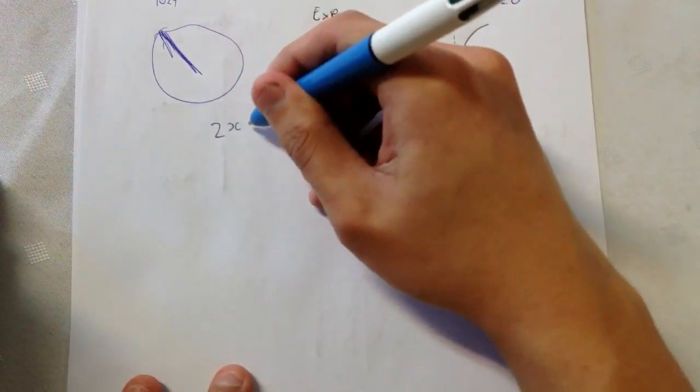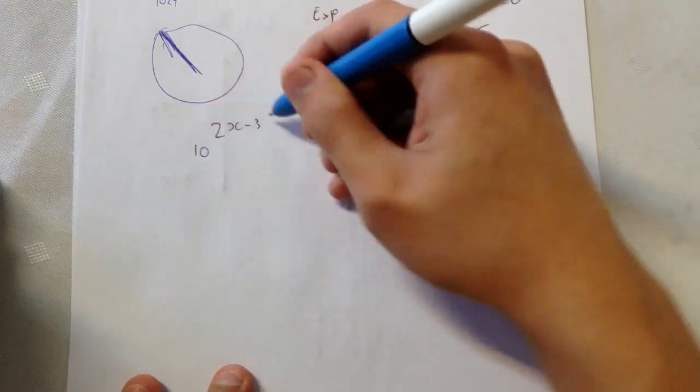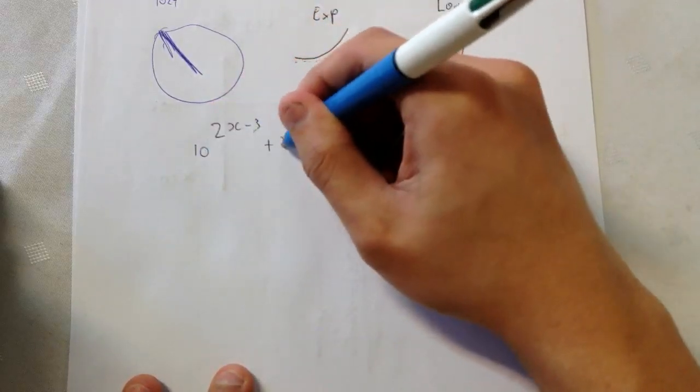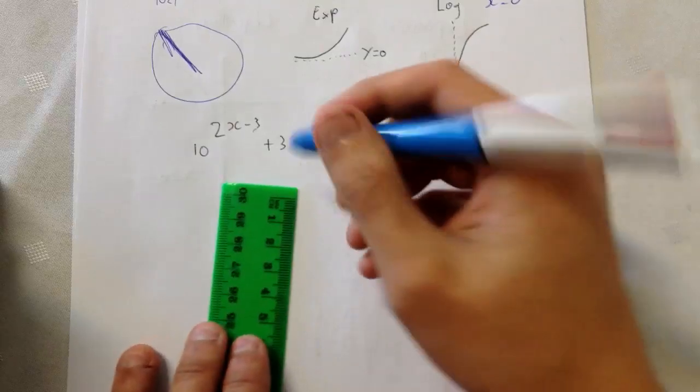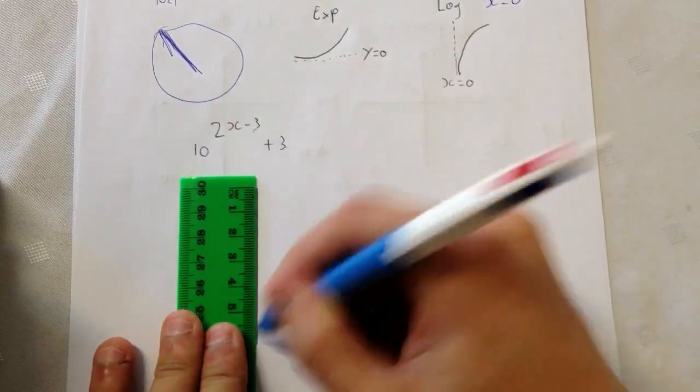So, if I give you this, let's say, 10 to the 2x minus 3, plus 3. What would that look like? First we draw our axes.